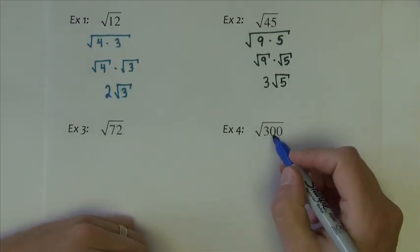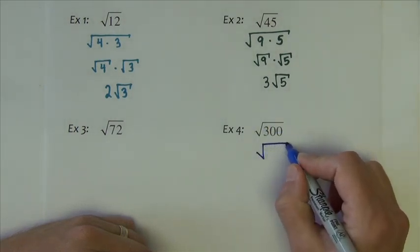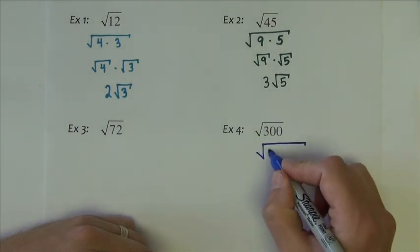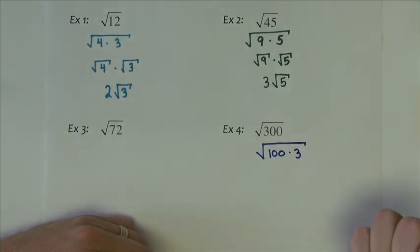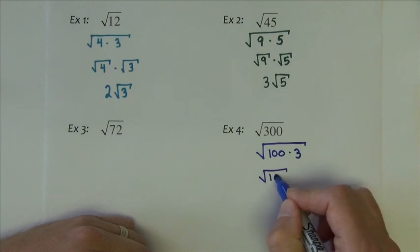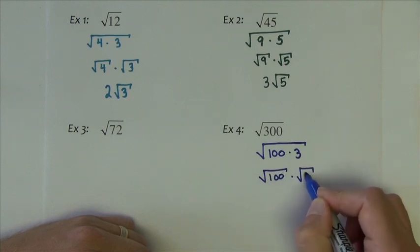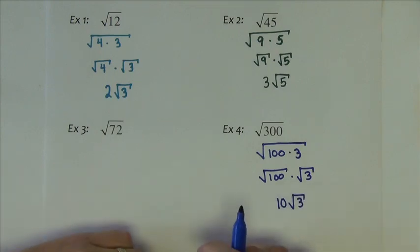Next let's come down here to square root of 300. Two numbers that multiply to 300 would be 100 times 3. This becomes square root of 100 times square root of 3, which becomes 10 times the square root of 3.